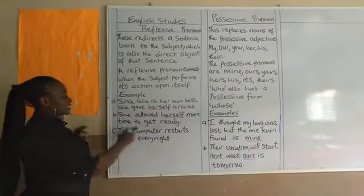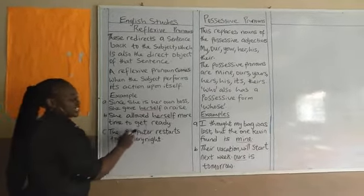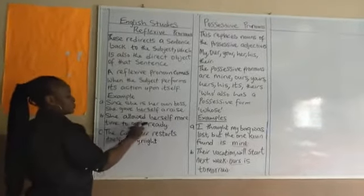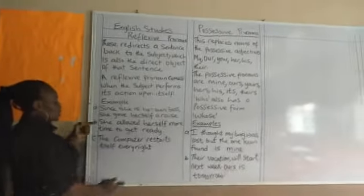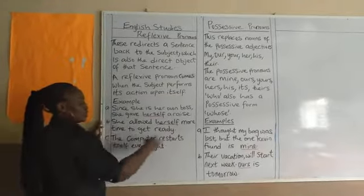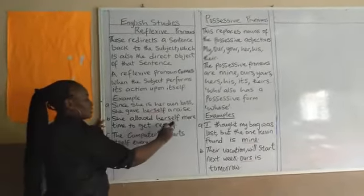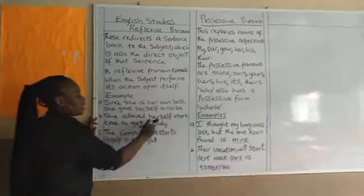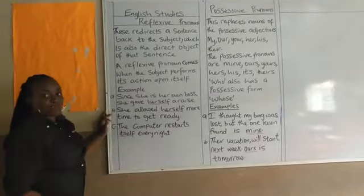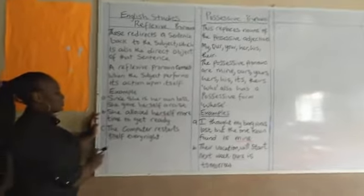She allowed herself more time to get ready. So 'she' is our subject, and what did she do? She did something to herself — she took more time for herself to get ready. So 'herself' here also becomes a reflexive pronoun.